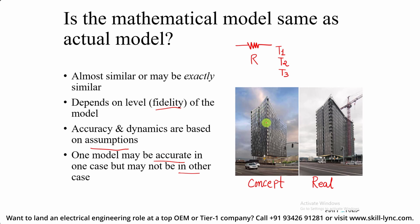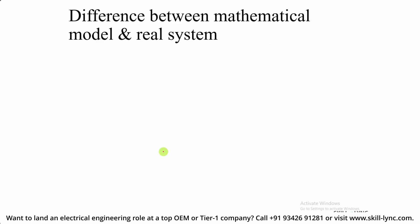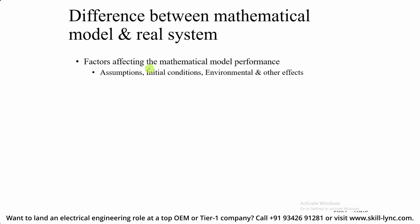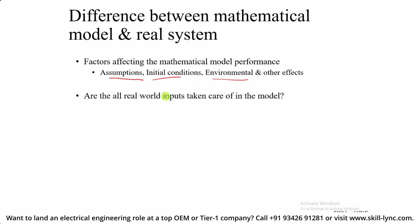For example, a building model may match from a visual standpoint and even from a loading standpoint, but when it comes to an earthquake test or dynamic test, that model may not have sufficient details. So one model may be accurate in one case but not in another. The difference between a mathematical model and the real system is determined by the assumptions made while creating the model, initial conditions, and actual environmental effects. If you consider all real-world inputs and their behavior, your model may be as real as the actual system.